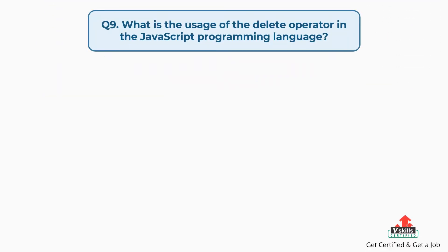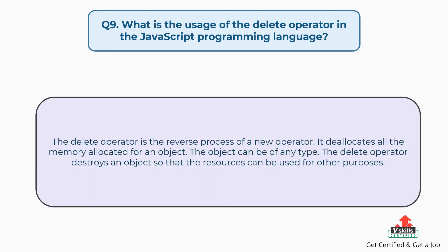Question number nine: what is the usage of the delete operator in JavaScript? The delete operator is the reverse process of a new operator. It deallocates all the memory allocated for an object. The object can be of any type. The delete operator destroys an object so that the resources can be used for other purposes.